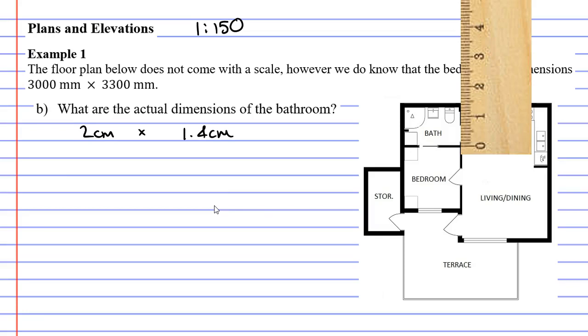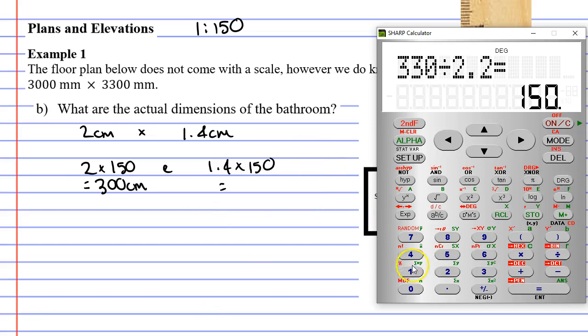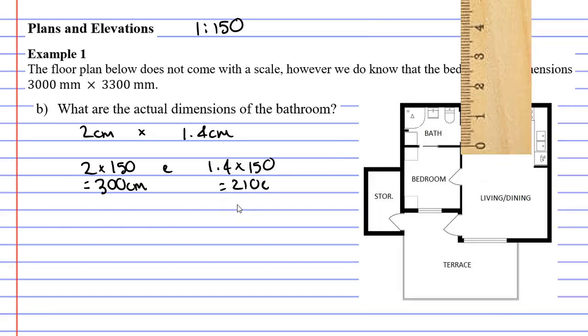Because we have our scale we know that everything is 150 times bigger than that. So we're just going to go 2 times 150 and 1.4 times 150 and see what we get. 2 times 150 is 300 centimeters. 1.4 times 150 is 210 centimeters.